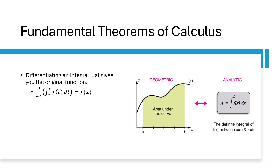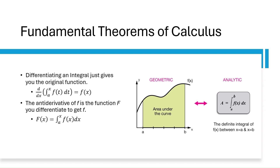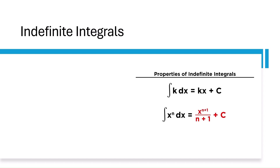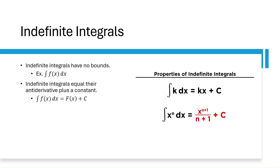Definite integrals give rise to the two fundamental theorems of calculus. One is that when you differentiate an integral, you just get the original function, meaning derivatives and integrals are inverses of each other. The antiderivative of a function F is the function that you differentiate to get F, and this gives rise to the other fundamental theorem: integrating a function F from A to B equals the antiderivative evaluated at B minus the antiderivative evaluated at A. Indefinite integrals have no bounds, and when you evaluate them, you get their antiderivative plus a constant C.